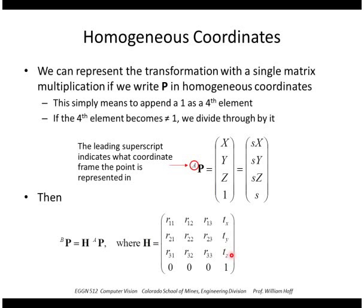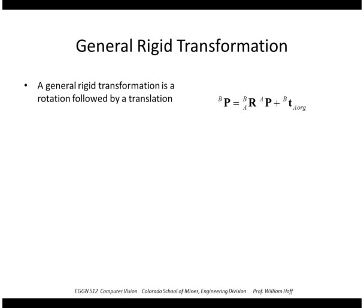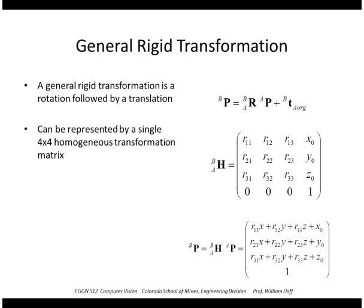We're going to treat the leading superscript as the representation of what frame the point is represented in. So that allows us to write a transformation of a point as a single matrix multiplication of a 4 by 4 matrix, where the 3 by 3 here is the rotation and the 3 by 1 is the translation. So just to repeat, a general rigid transformation is a rotation followed by a translation, and we can write it as a 4 by 4 matrix H. And the notation here, I mentioned that this leading subscript is the from and the leading superscript is the to. But it's nice because the convention is we multiply these together, we simply cancel out the leading subscript with the trailing superscript.